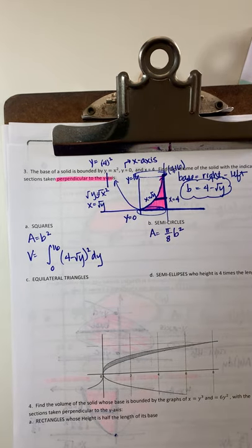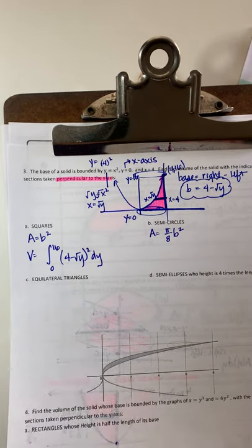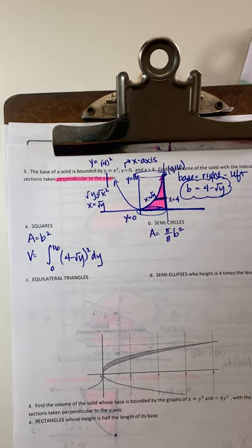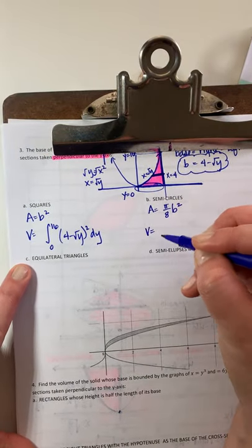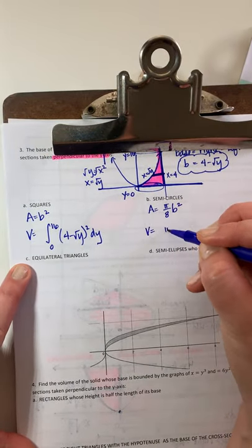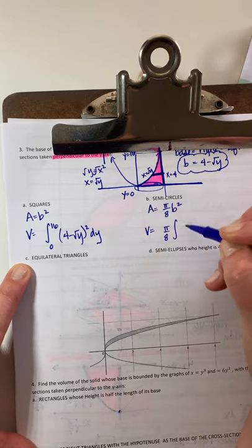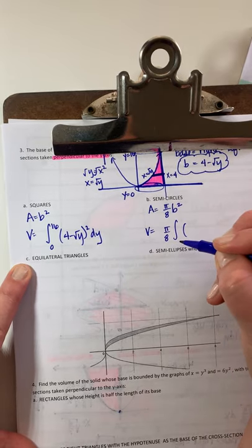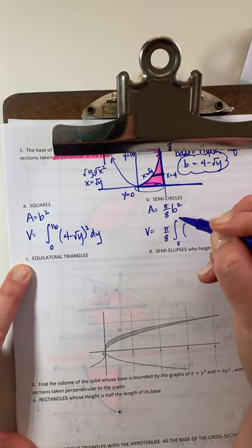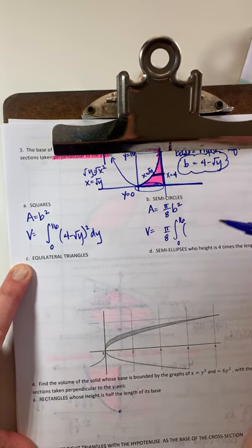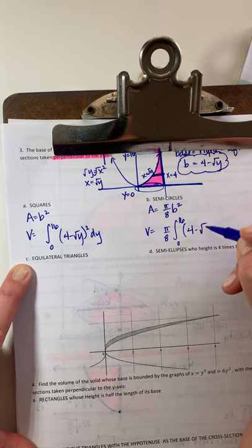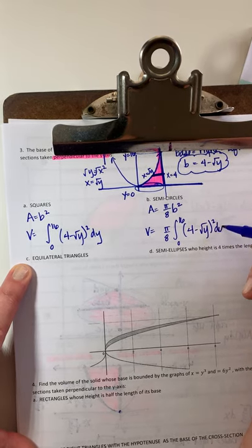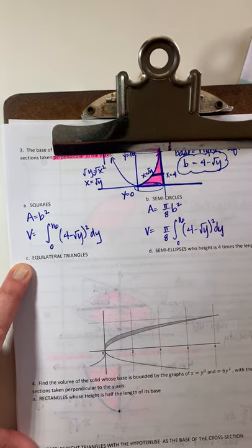For semi-circle cross-sections: the formula from the notes is pi over 8 times B squared. Volume is the integral — putting pi/8 in front or inside doesn't matter — from 0 to 16 of 4 minus root y, squared, dy.